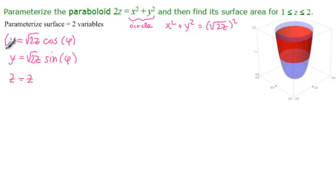Let's check to make sure that this parameterization works. We've got two variables, phi and z. No problem. If we do x squared plus y squared, we do get 2z. And z equal to z.